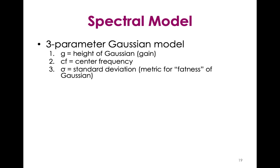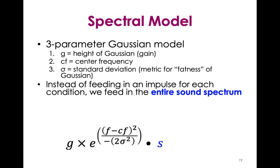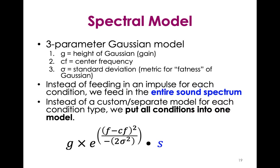To drive the point home that tonotopy seems to be driven by spectral content, we made a modification to the model to create what we'll call the spectral model. Instead of feeding in a single value for each condition — a single frequency, the fundamental frequency, or the spectral centroid — we're now feeding in the entire spectrum. Since pitch and timbre conditions are complex tones, this seems appropriate, and for the pure tone condition this model is effectively the same as the last one. The nice thing about working with the sound spectrum is that we can put all conditions into the model together — it's more of a sound-computable model.